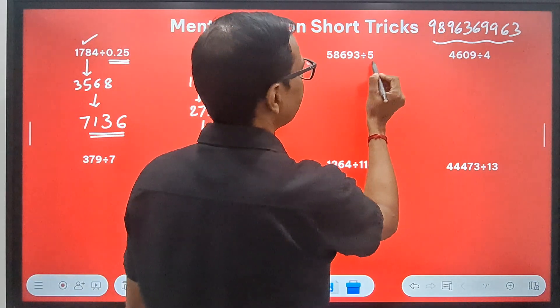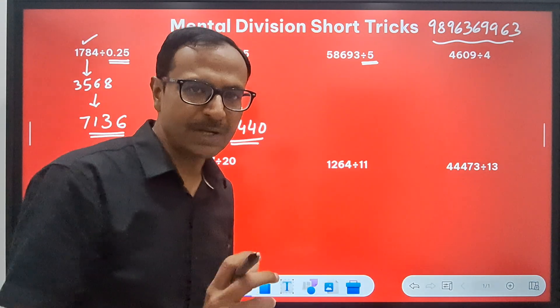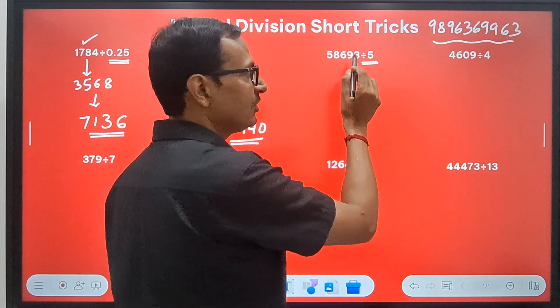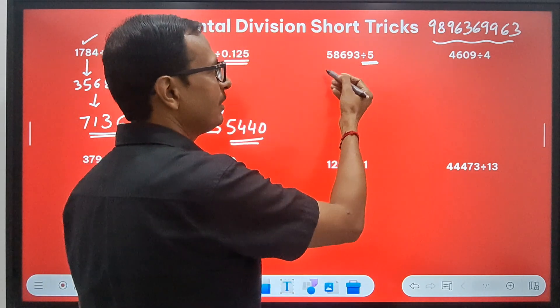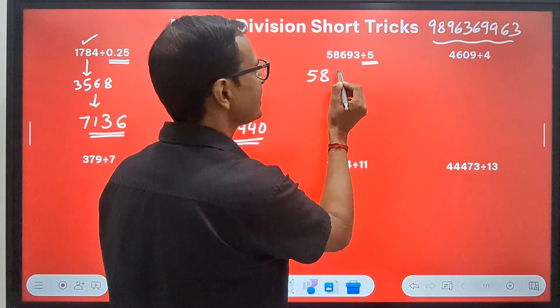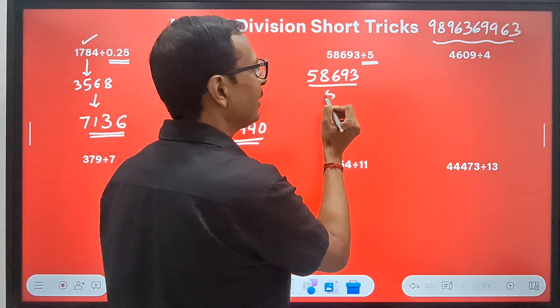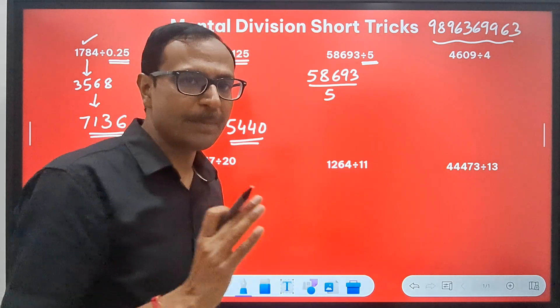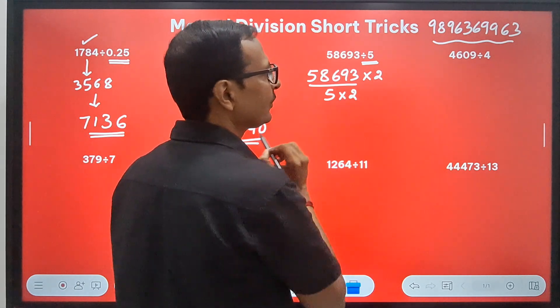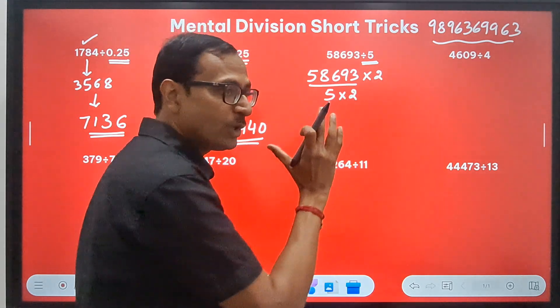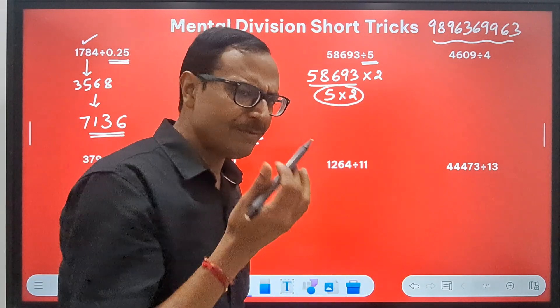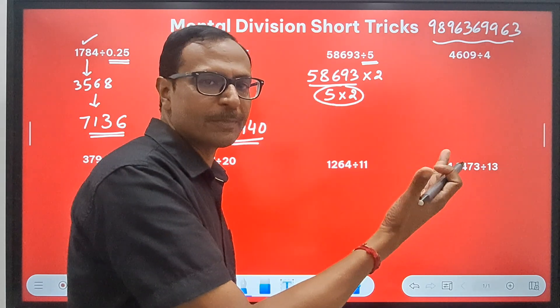When the divisor is 5, this is one of the simpler things to understand. The dividend here is a big number, 58693, a five-digit number, and we have to divide it by 5. It's easier to divide a number by 10, so if I know the skill of doubling, I can double this number and just divide by 10. Division by 10 is pretty easy—you put a decimal one digit from the right.